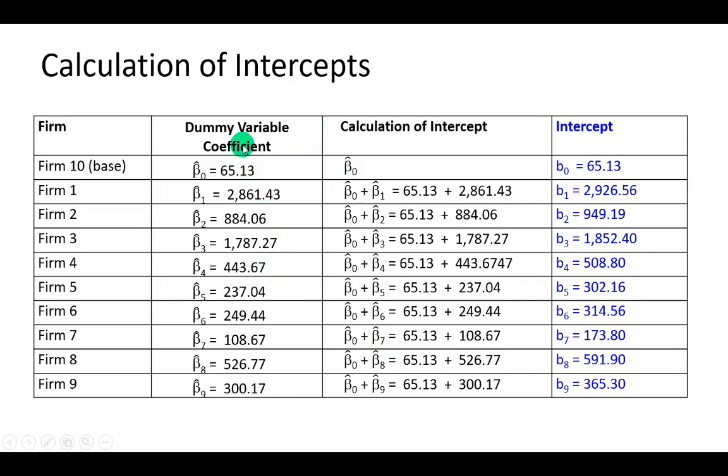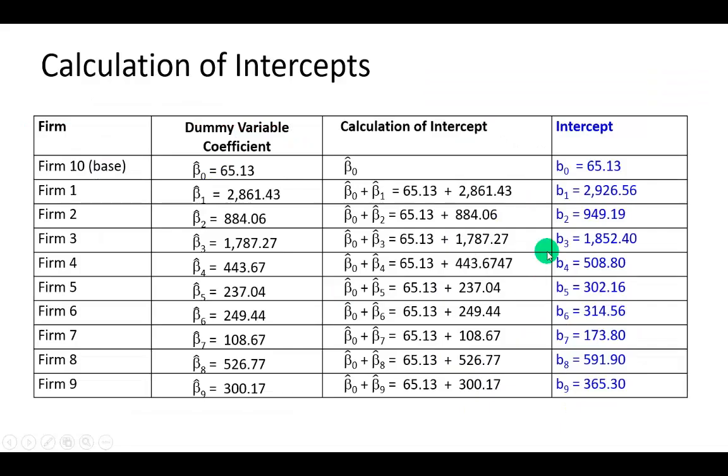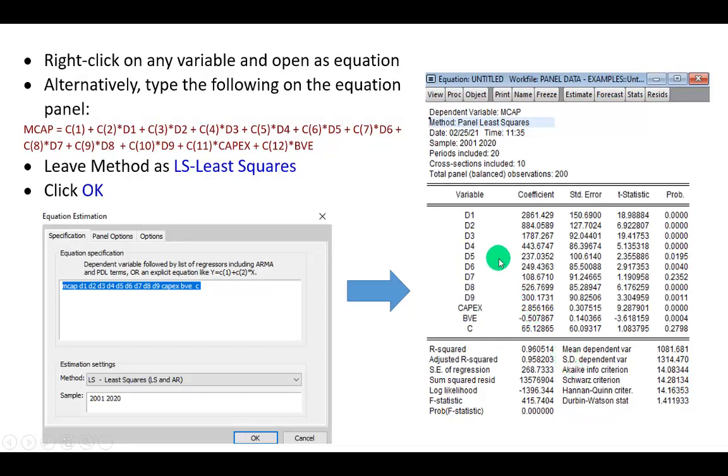So these are the dummy variable coefficients from running this regression, these values right here. And so we're going to have to calculate the intercepts for each firm to kind of see what they truly are, which is what you see right here.